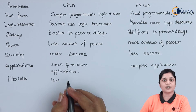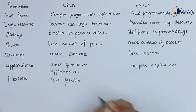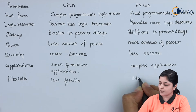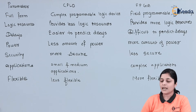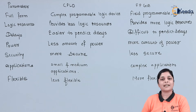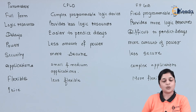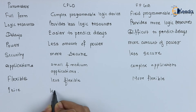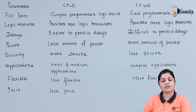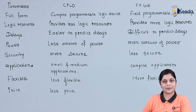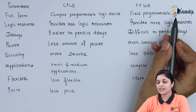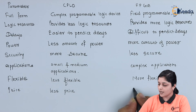Regarding the flexibility point, CPLDs are less flexible as compared to FPGAs, and FPGAs are more flexible than CPLDs. The next parameter is price. To design a CPLD circuit, less price is required — applications related to CPLD require a lesser amount of cost.